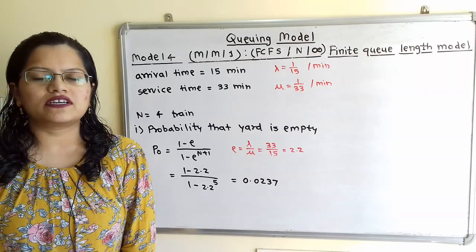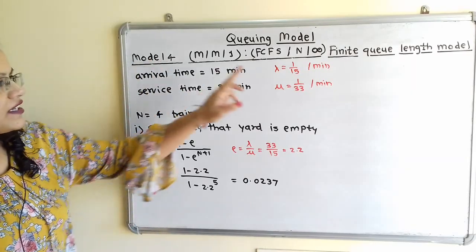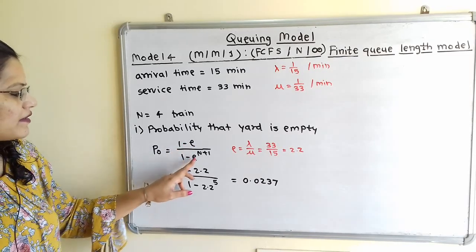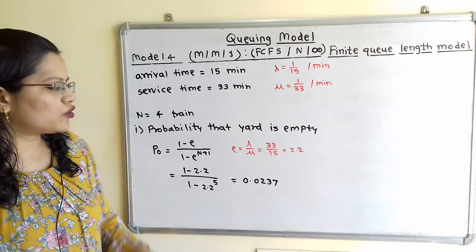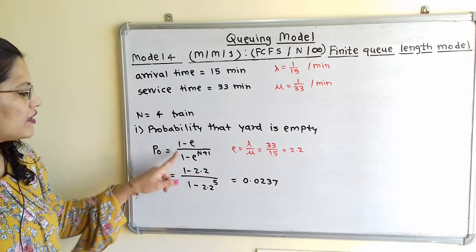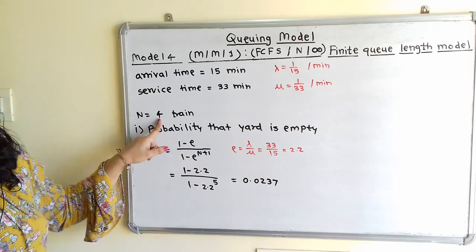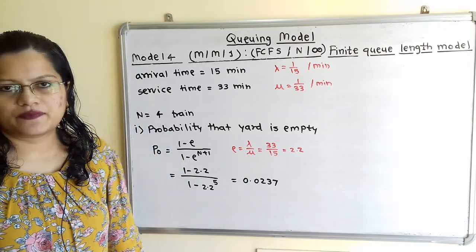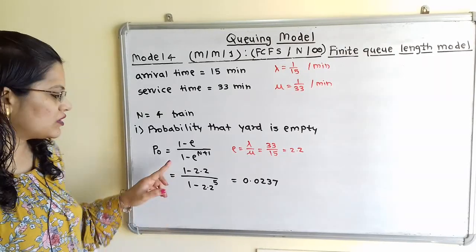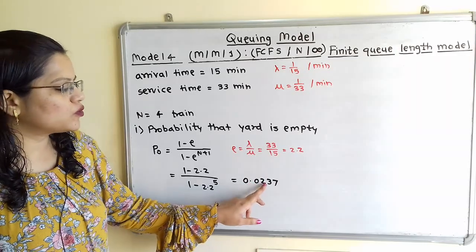For Model 4, P(0) = (1 − ρ) / (1 − ρ^(N+1)). Here ρ = λ/μ = 2.2. Substituting: P(0) = (1 − 2.2) / (1 − 2.2^(4+1)) = (1 − 2.2) / (1 − 2.2^5). The minus signs in numerator and denominator cancel, giving P(0) = 0.10237.